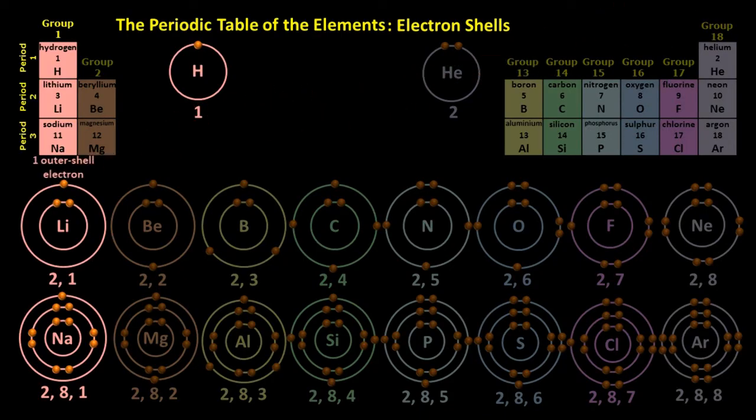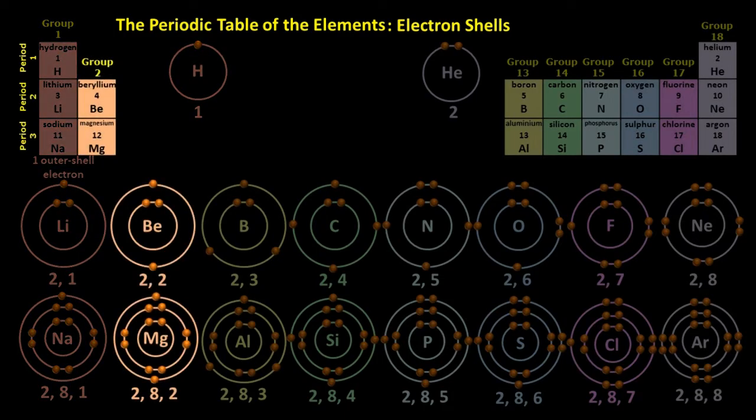The atoms in group two, beryllium and magnesium and all the rest, have two electrons in their outer shell.